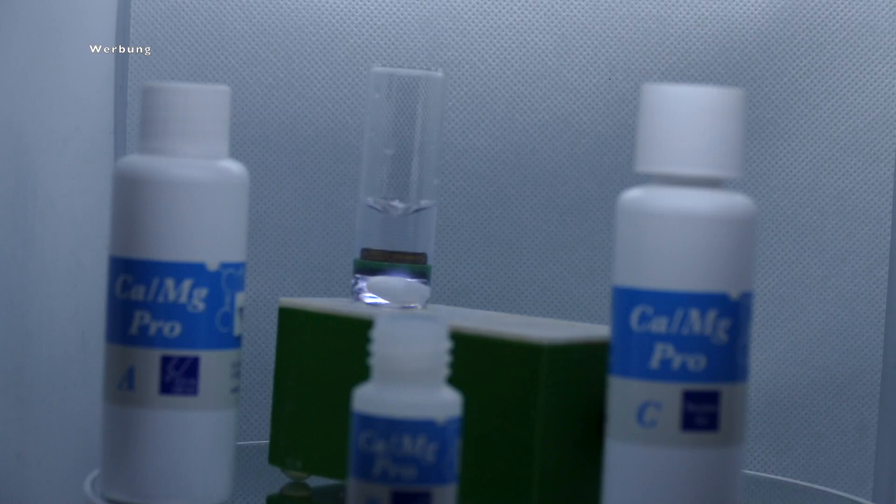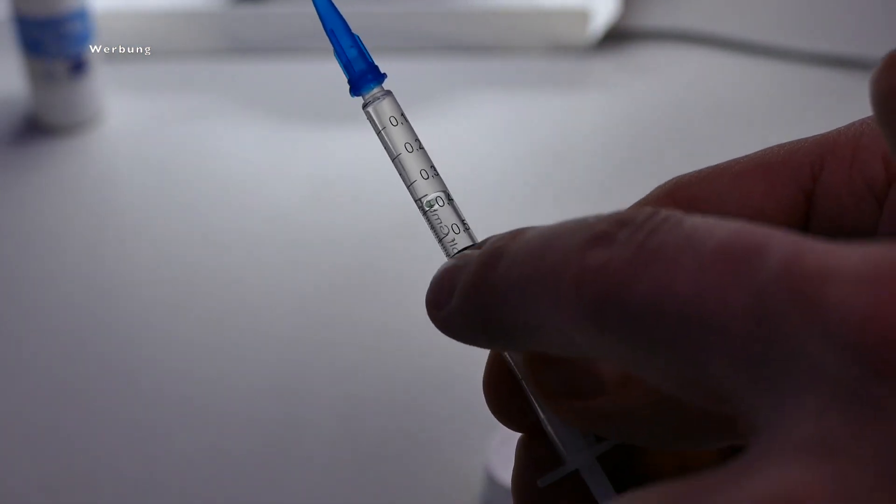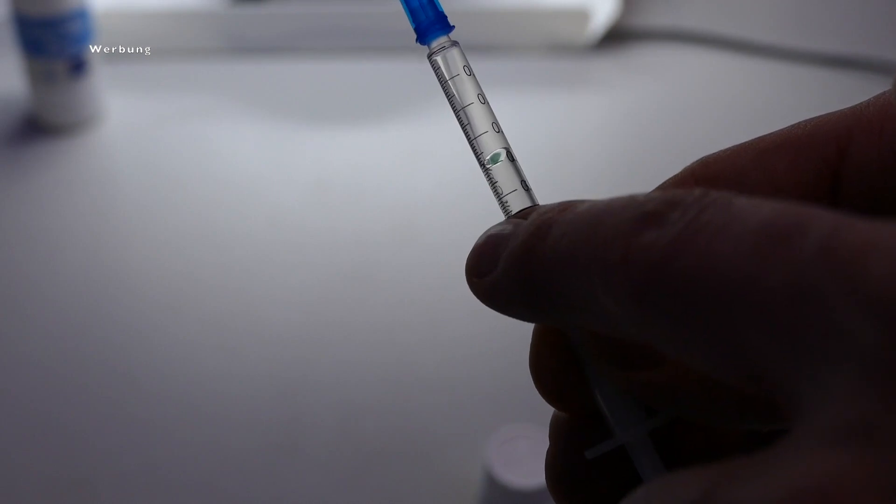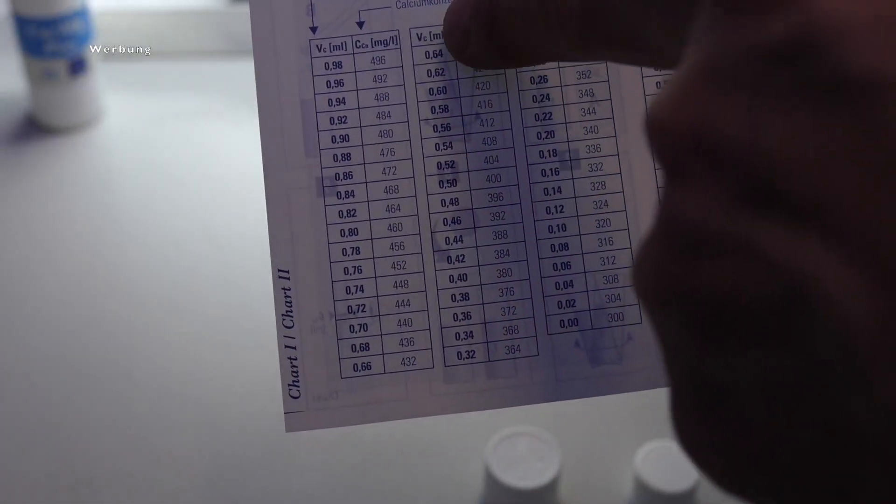You now have a remaining amount of reagent in your syringe, and you use that to read off your calcium concentration in this table, which you can see here. Okay, we have now determined our calcium value, but now we also want to know what magnesium value we have in the saltwater aquarium.